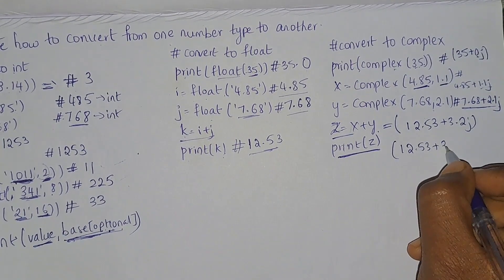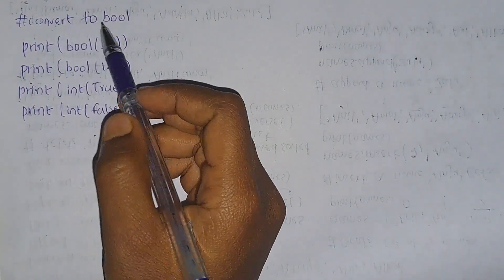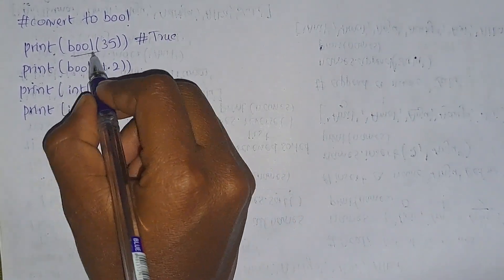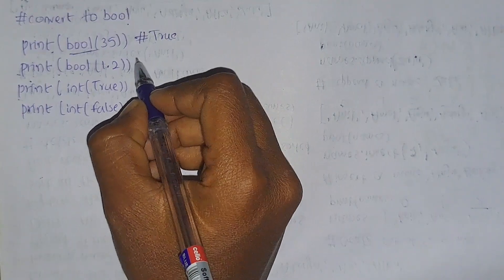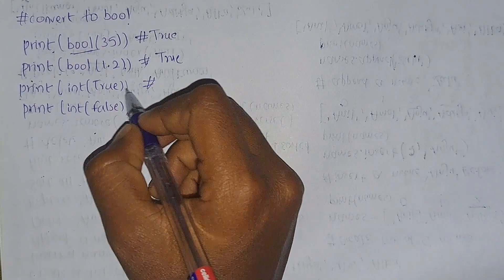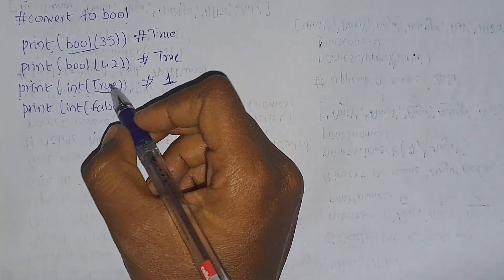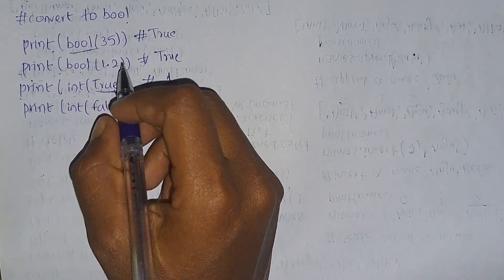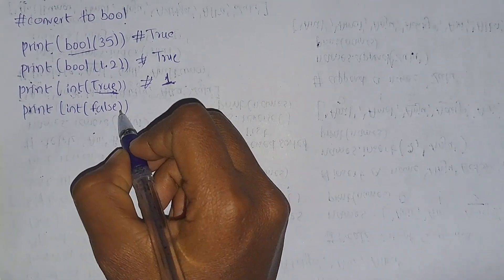When you print z, the output is 12.53+3.2j. Now coming to bool conversion: if you print bool(35) it returns True, because we are giving a non-zero number. Similarly, 1.2 is a non-zero number so it returns True. And int(True) returns 1 because True represents a non-zero number and is considered as 1 by default.